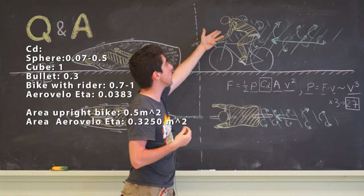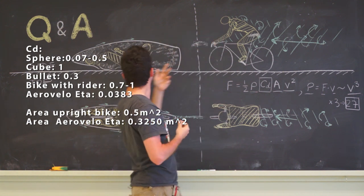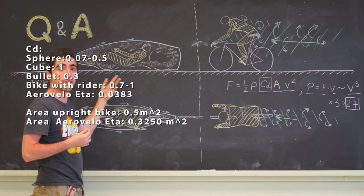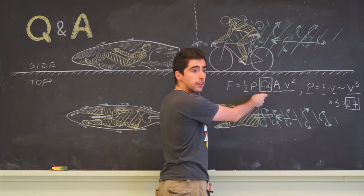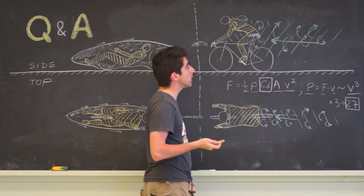So this shape has a pretty bad CD, while this shape has a very good CD. This is the main advantage we have over a regular bicycle.